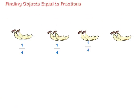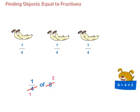She will first divide bananas into four equal parts and then take three parts. Now, one upon four of eight is equal to two.